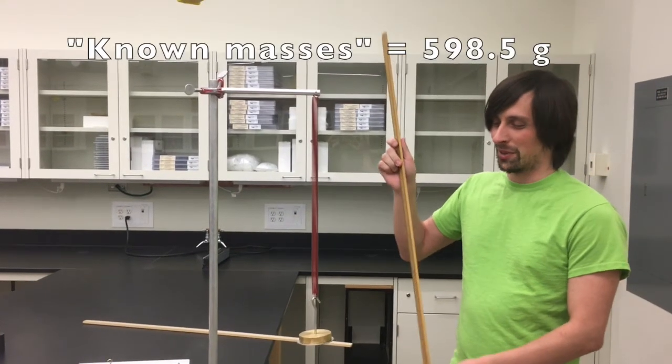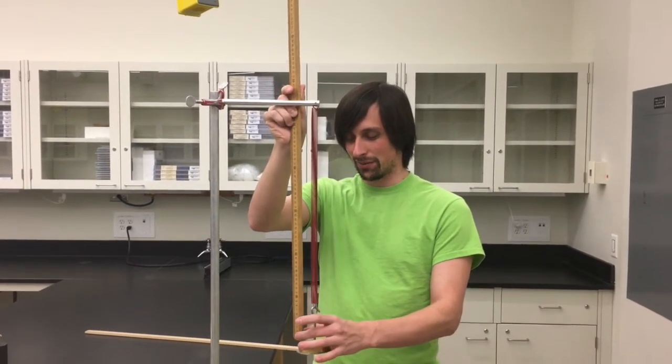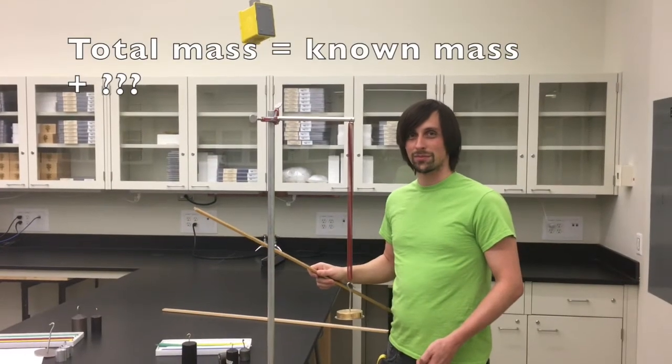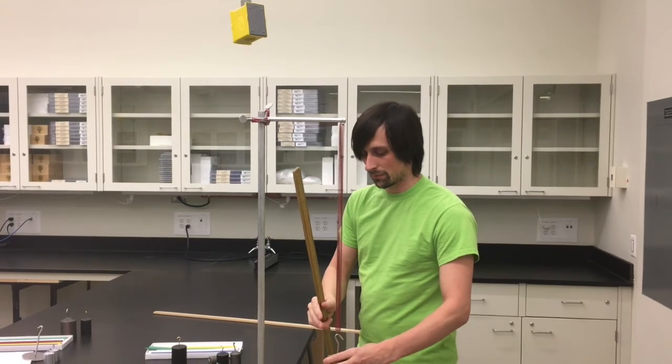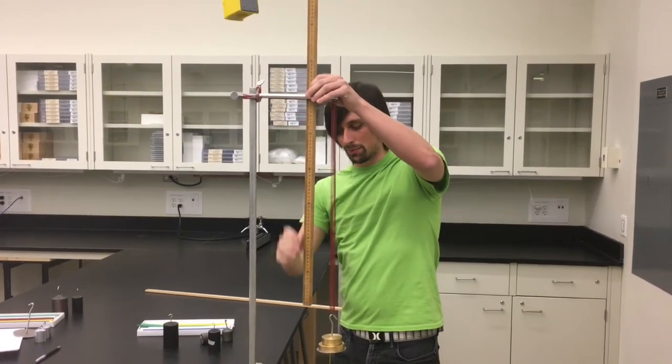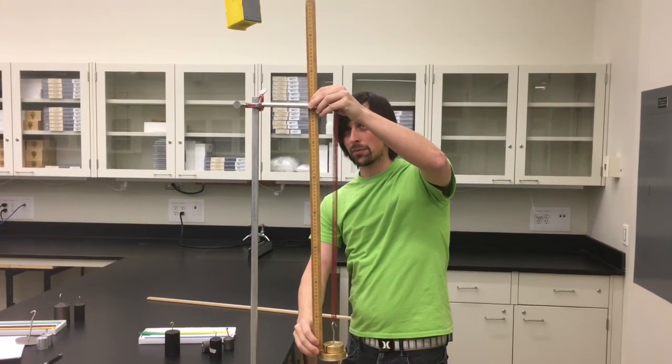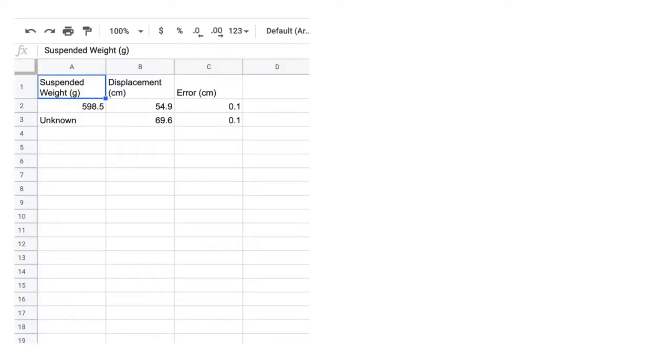The next thing that we'll need to do is to find the unknown mass using the spring constant that we just calculated. For the unknown measurement, we are going to measure from the top again to the top of the known masses and the known hanger just like this. We're going to have the unknown mass on the spring.